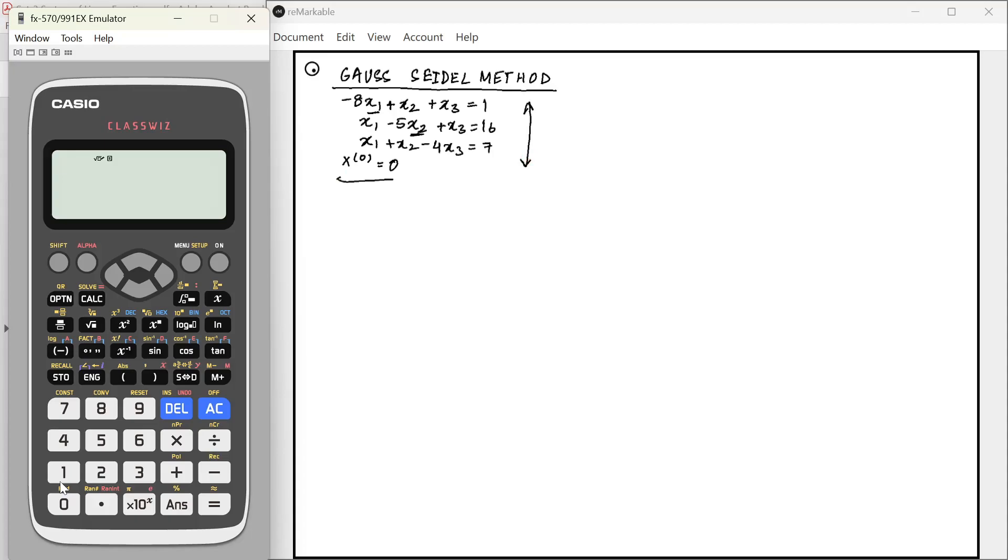An initial guess of x1, x2 and x3 is given to us. The first step here is that we represent the first, second and third equation in the form of x1, x2 and x3 respectively.